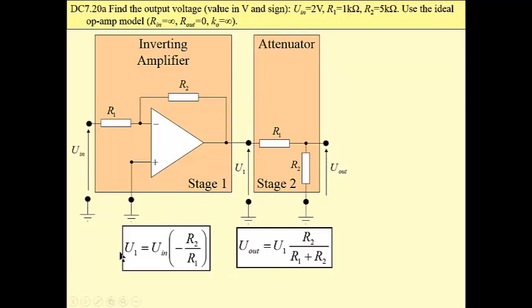Once again, let us recall a formula for inverted amplifier, which has been proved elsewhere. This is an inverted amplifier. It means we have sign minus. Gain is negative.